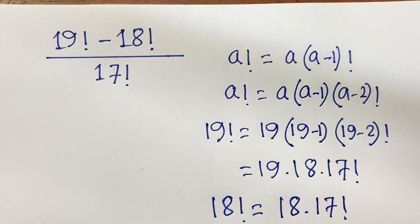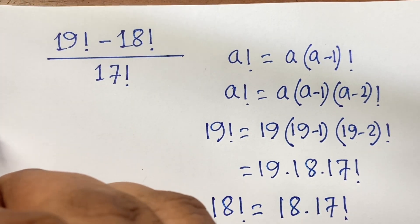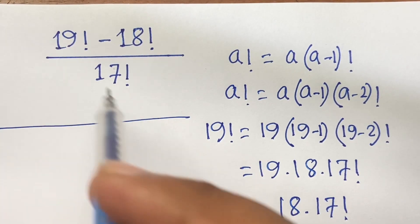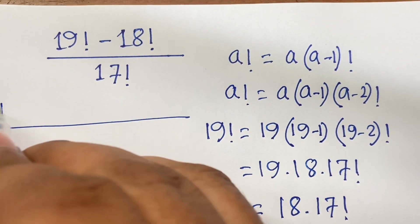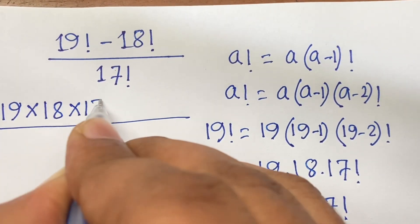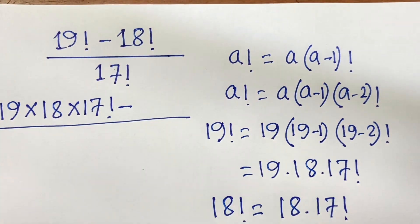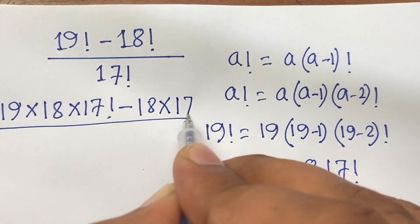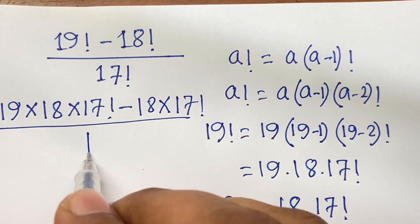Now I can say here is, so here is 19 factorial. So this expression is 19 times 18 times 17 factorial minus 18 factorial equals 18 times 17 factorial, over 17 factorial.